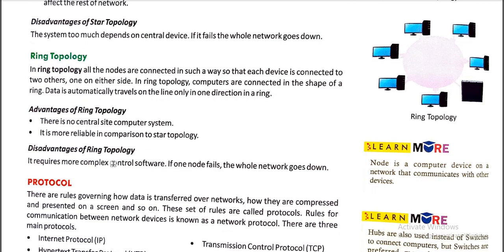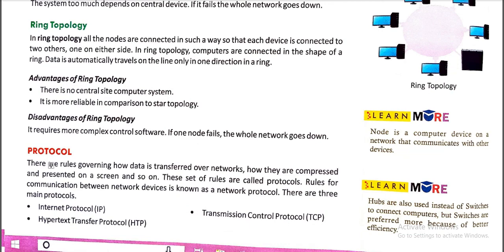The next point is protocol — a very important topic. There are rules governing how data is transferred over a network, how it is compressed and presented on a screen. This set of rules is called protocols. Rules for communication between network devices are known as network protocols. When we are sending any type of data from one computer to another, we use an address, and that address system is called protocols. There are three main protocols.